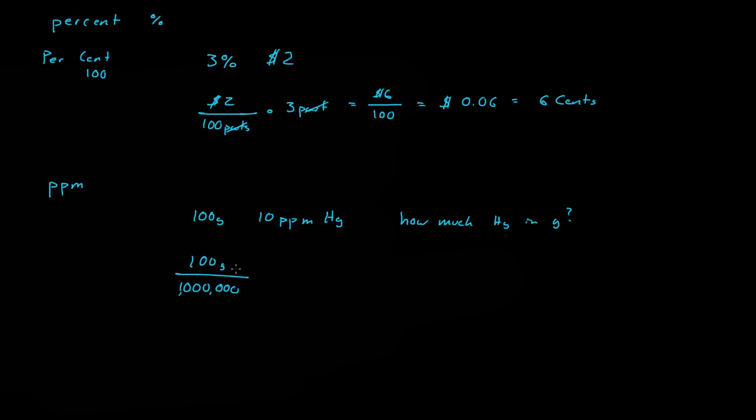Now, of those million parts of the solution, ten parts of those are mercury. So we multiply that by ten parts. Now, what is that equal to?